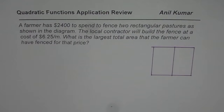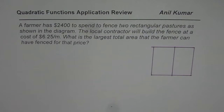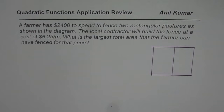Amanil Kumar here. Here is an excellent question on quadratic functions application. A farmer has $2400 to spend to fence two rectangular pastures as shown in the diagram. The local contractor will build the fence at a cost of $6.25 per meter. What is the largest total area that the farmer can have fenced for that price?